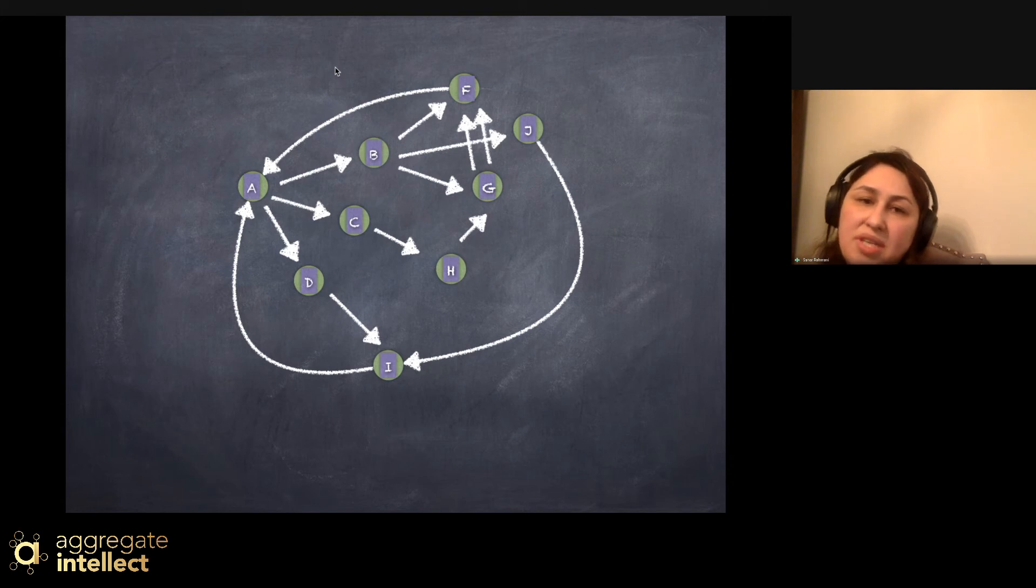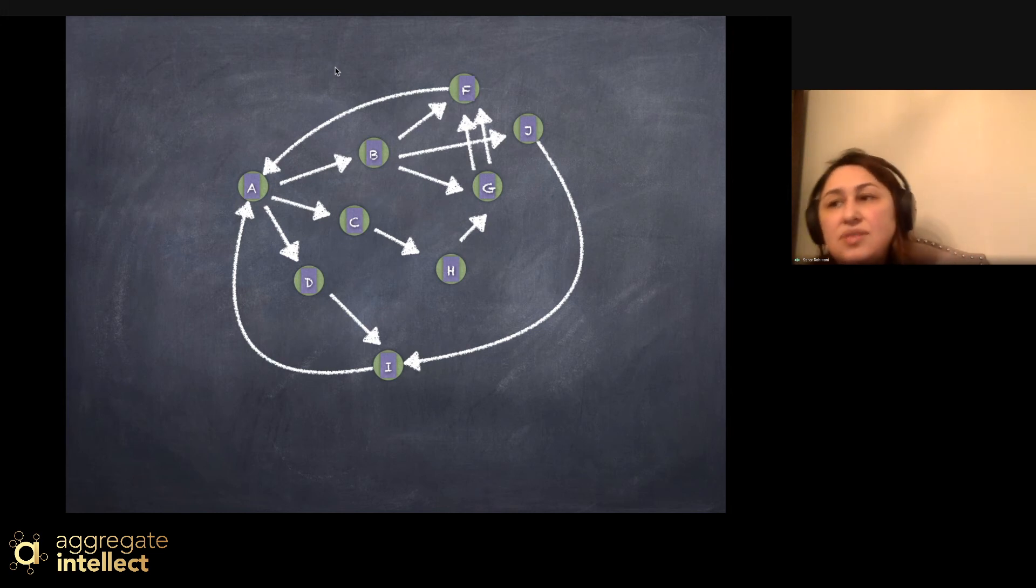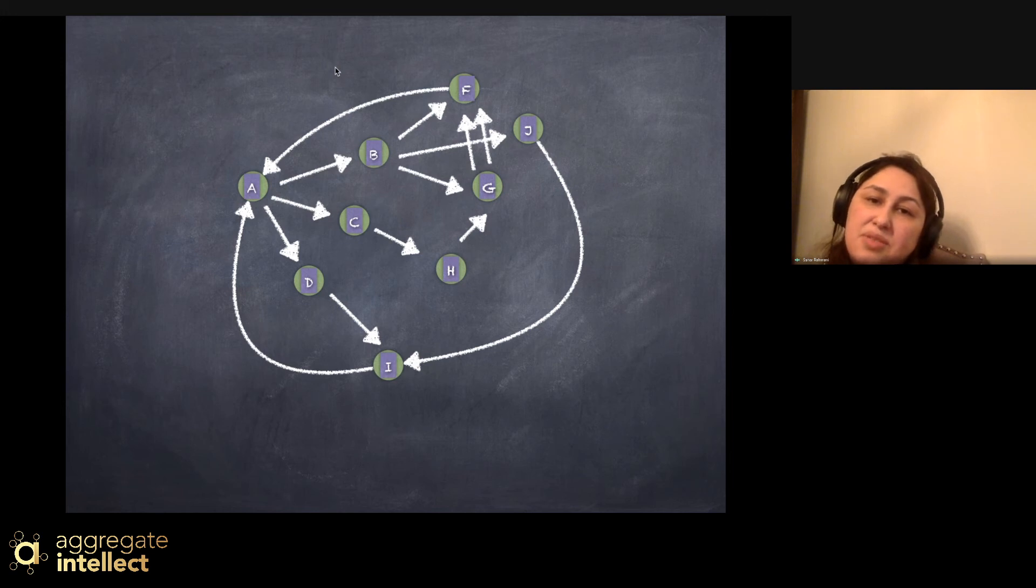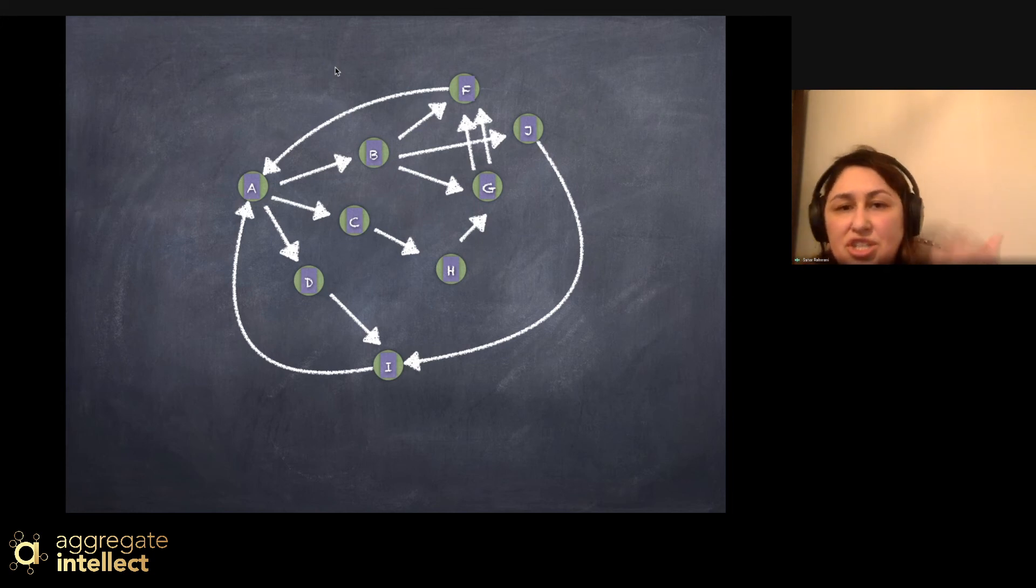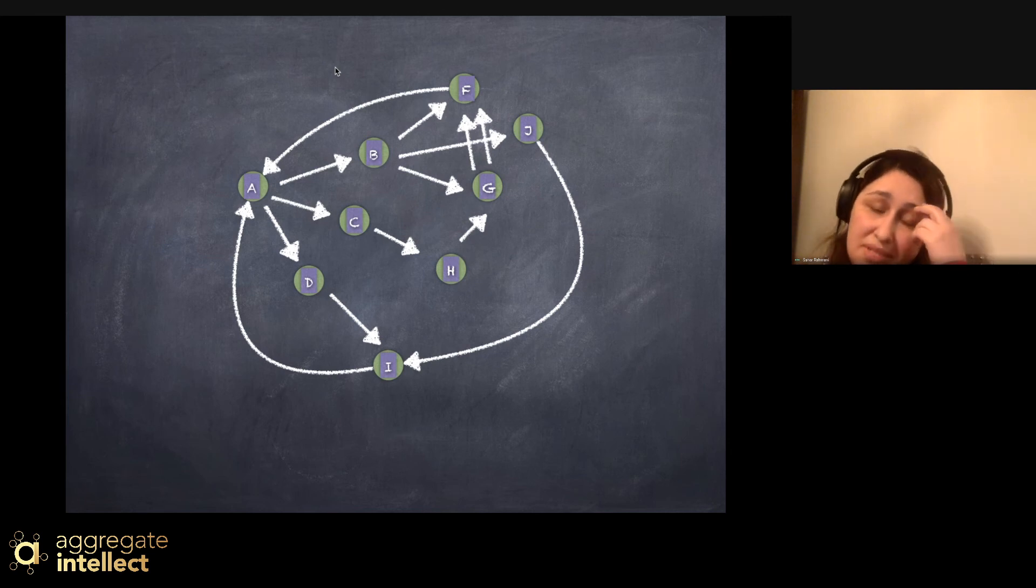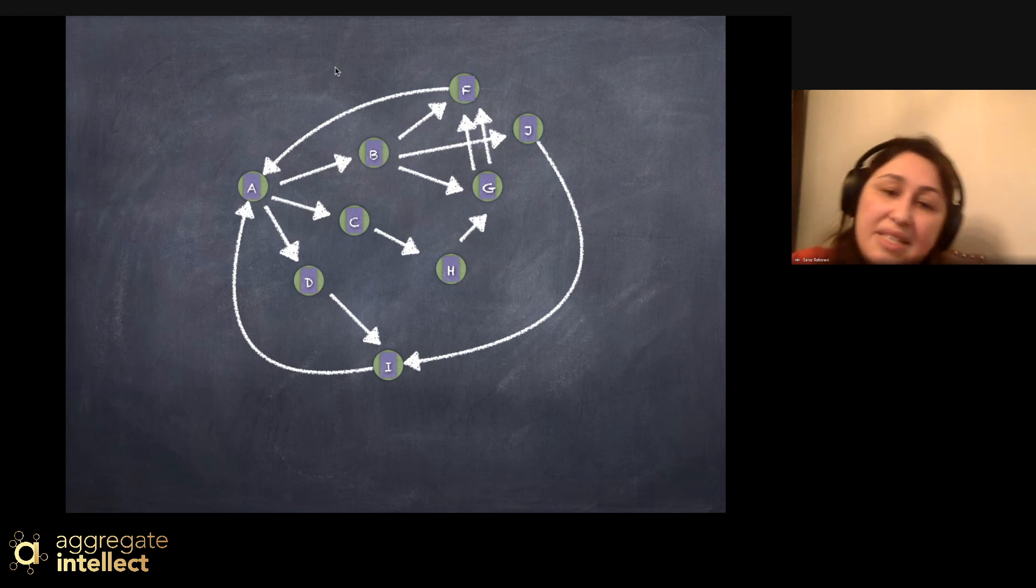If you look at, for example, this graph, you would see person A sends money to person B, C, D. It could be in two different times as well. And then person B sends money to person F, J, G. Person C sends money to H. Person D sends money to I. Person H sends to G. Person G, through two transactions, sends money to F. And then F returns the money to A. And then the same for person J sends it to I, and then I returns the money to A.